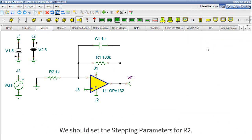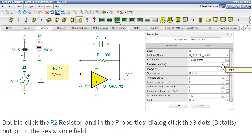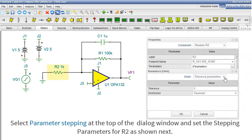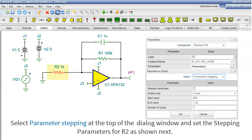We should set the stepping parameters for R2. Double-click the R2 resistor, and in the Properties dialog, click the three dots button in the resistance field. Select Parameter Stepping at the top of the dialog window, and set the stepping parameters for R2 as shown next.